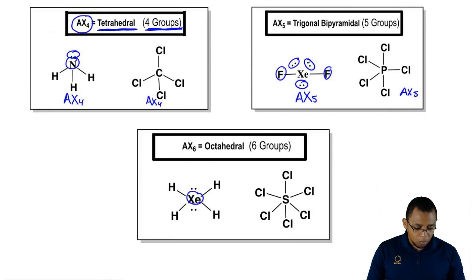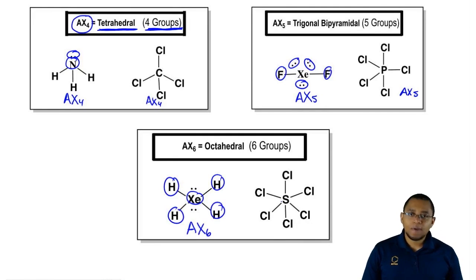Here, xenon would be our central element A. It's surrounded by four elements and it has two lone pairs, AX6, and sulfur AX6.